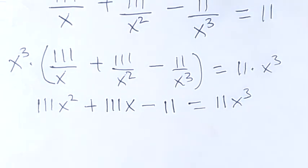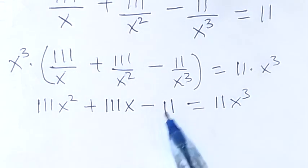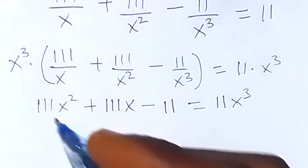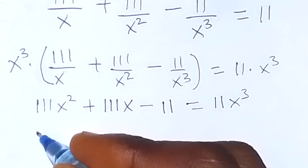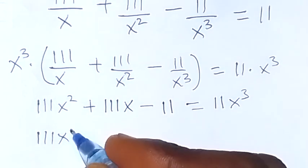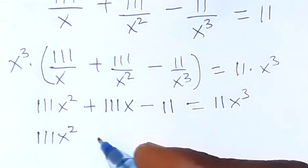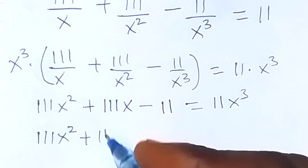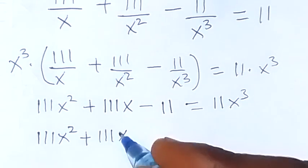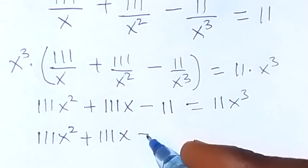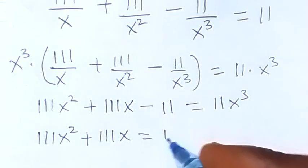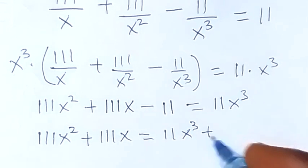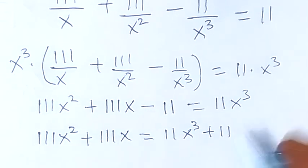Now from here, let's take this minus 11 to this side — it becomes plus — and we have x raised to power 2 plus x, which gives us 11x raised to power 3 plus 11.